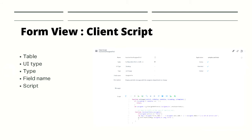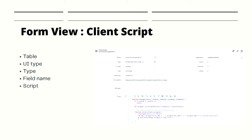In the script field you can define the JavaScript. For example, when the caller name or color field changes, you would like to run a script. The script field is where you put the actual JavaScript that runs within the browser. It is important to note that you do have access to jQuery in the script since it runs on the browser, but it is not always recommended to manipulate the DOM directly with jQuery. The best practice is to instead use the ServiceNow-provided APIs when available.